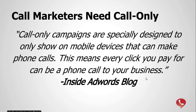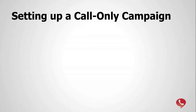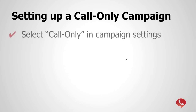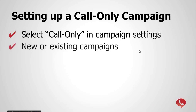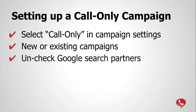Once you're ready to set up your first call-only campaign, it's fairly easy. The first step is to select the call-only radio button within the campaign settings. You can do this with a new or existing campaign — you can convert an old campaign that you've been using with call extensions over to call-only. I also always recommend unchecking Google Search Partners, because a lot of those partners don't have click-to-call capabilities, which leads to wasted spend.